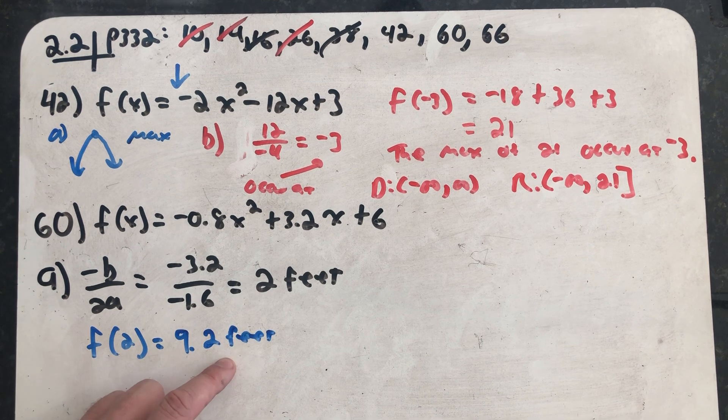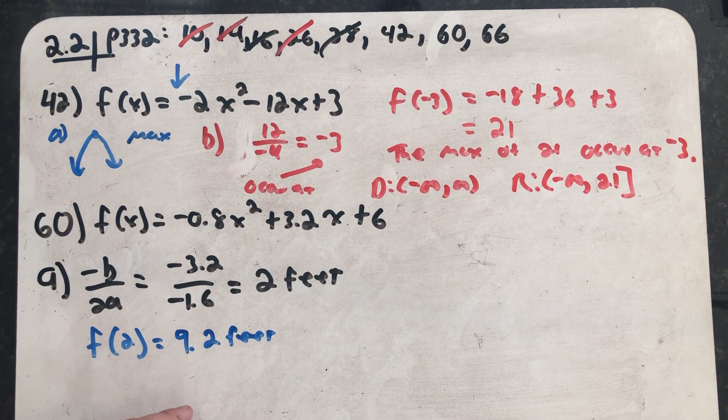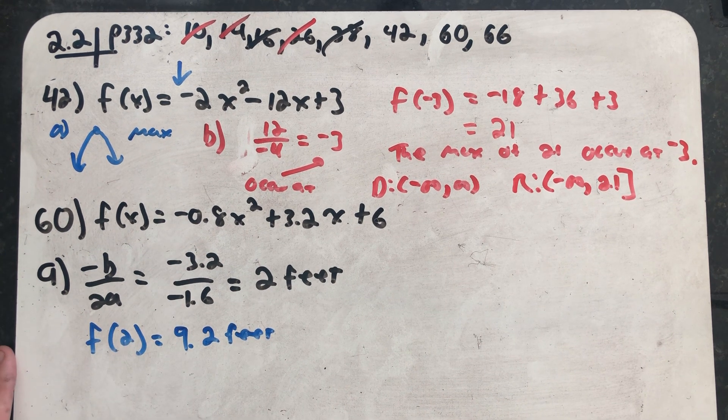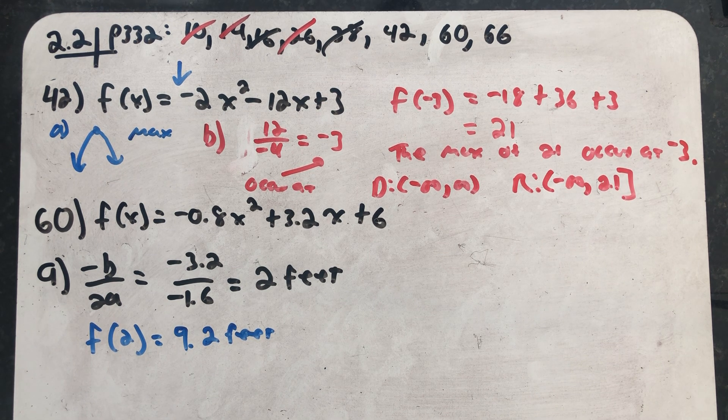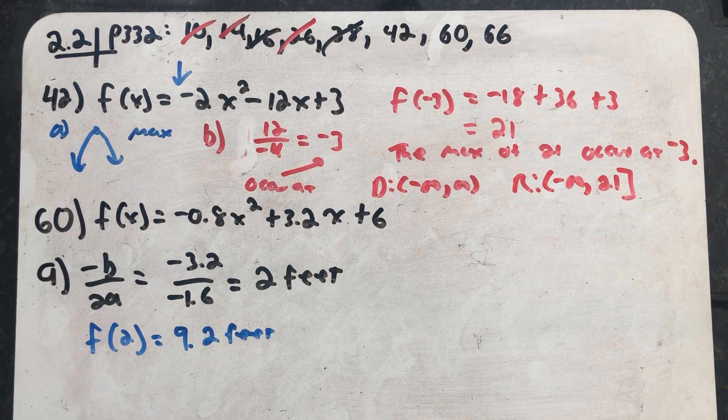The maximum value is 9.2 feet, the maximum height. It occurs 2 feet from where the ball was thrown. So my handwritten solutions include that written down in words. Part B.